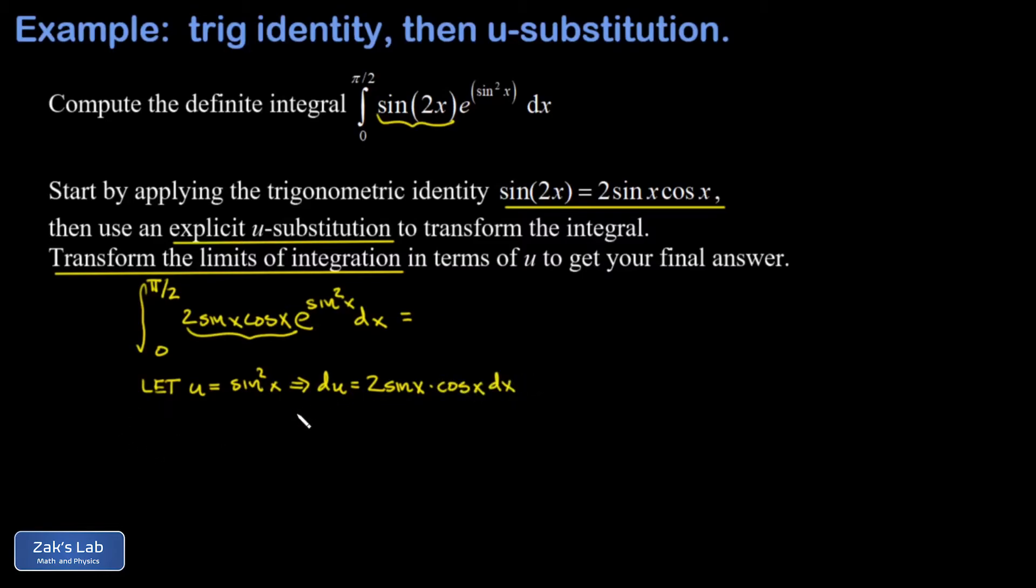Then we want to transform the limits of integration as well. So when x is 0, that's the lower limit. And u is going to be the square of the sine of 0. But the sine of 0 is just 0. So u begins at 0.